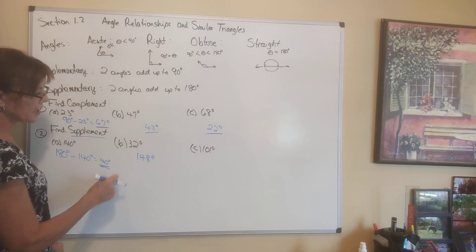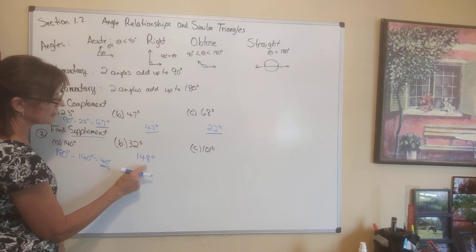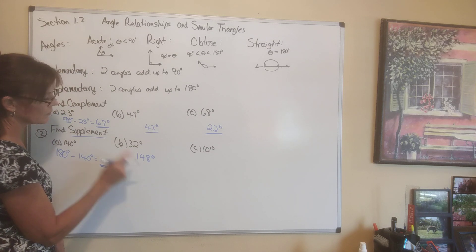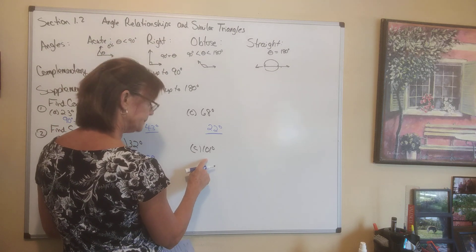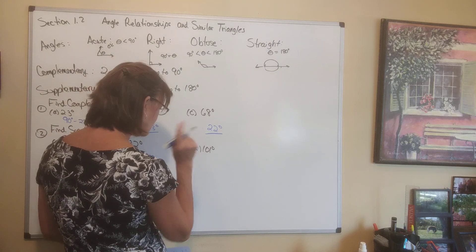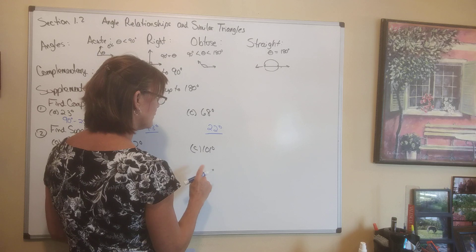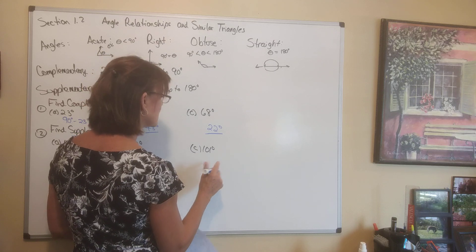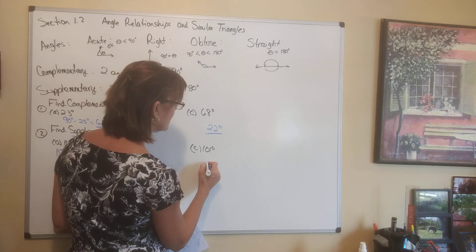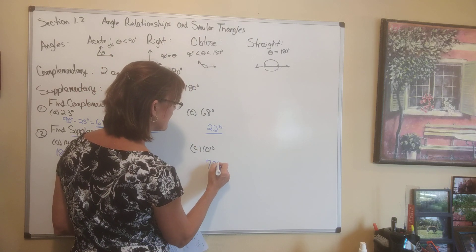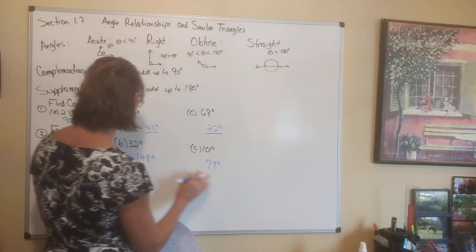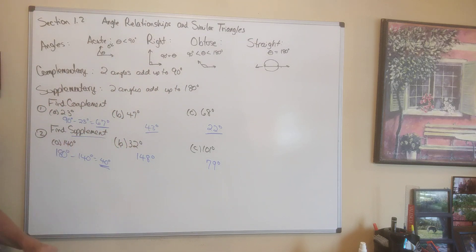You can always check by adding the angles together: 40 plus 140 gives 180. What is the supplement of 101 degrees? That would be 180 minus 101, which gives us 79 degrees. These are the supplements of those angles.